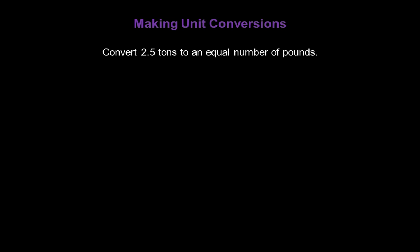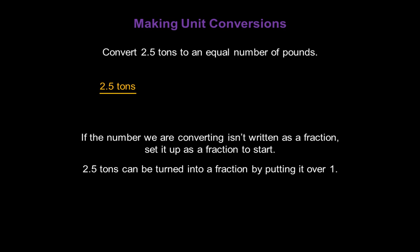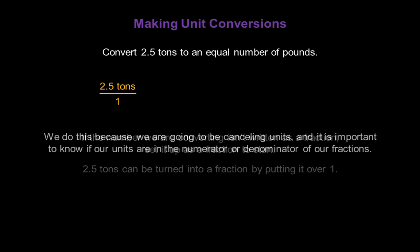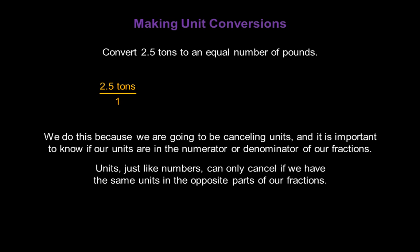Let's convert two and a half tons to an equal number of pounds. I'm going to start by writing down the number we'll convert: two and a half tons. If the number we are converting isn't already written as a fraction, let's set it up as a fraction to start. Two and a half tons can be turned into a fraction by putting it over one. We do this because we're going to be canceling units, and it's important to know if our units are in the numerator or denominator. Units, just like numbers, can only cancel if we have the same units in opposite parts of the fractions.